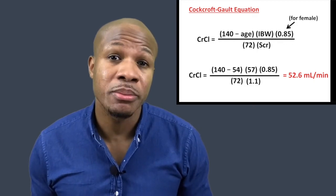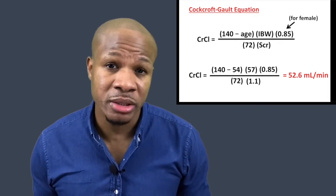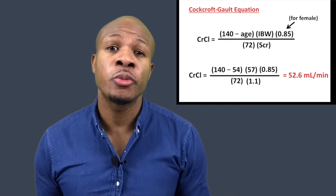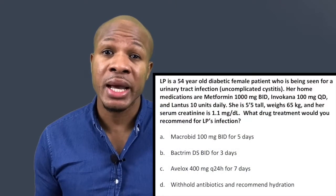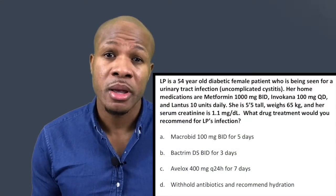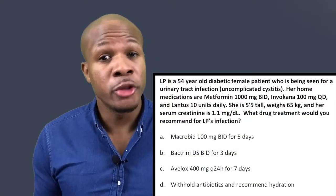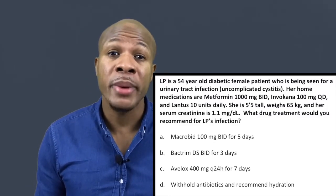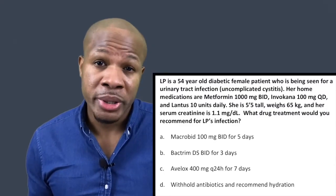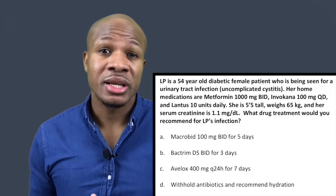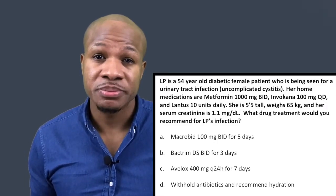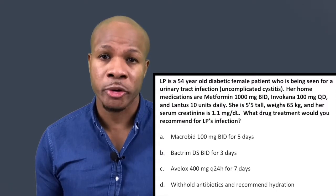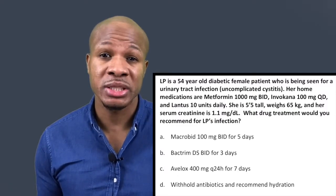When we plug that into our calculator, we get 52.6 milligrams per deciliter — that is the patient's creatinine clearance. Is that renal function adequate enough to give macrobid? No. The creatinine clearance cutoff for macrobid is 60, so macrobid is contraindicated in this patient.